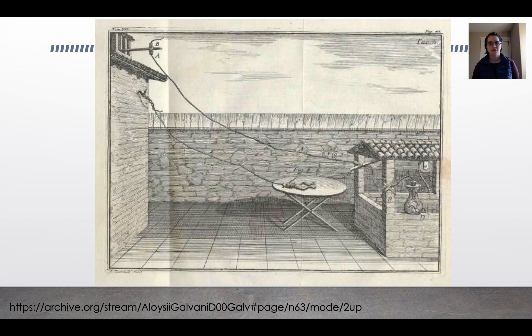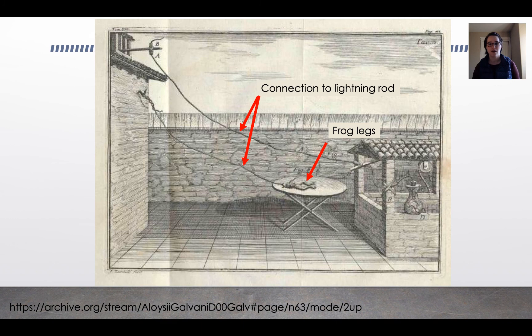In the 1790s, scientist Louis Galvani literally shocked the world when he announced his discovery that electricity made frog legs twitch. This is a picture of his experimental setup from his original publication. There's the frog legs sitting on the table, and here's the connection to the lightning rods that he used to generate the electricity.